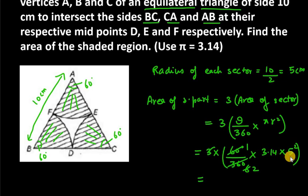So you get 3.14 into 25 over 2, or you can reduce 2 and 3.14 as 1.57 and multiply 1.57 with 25. So you will get 39.25 centimeter squared.